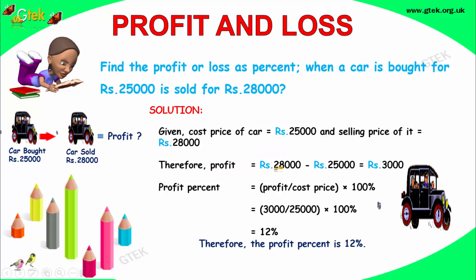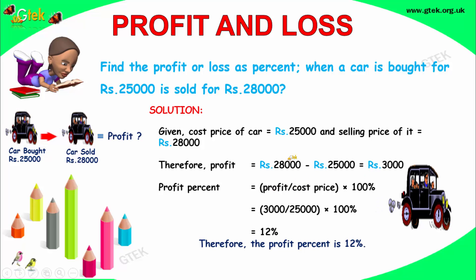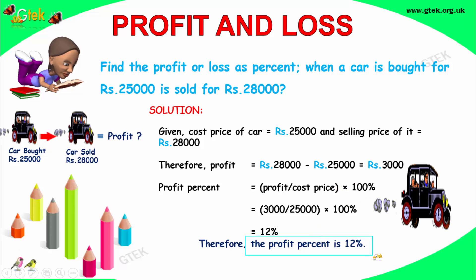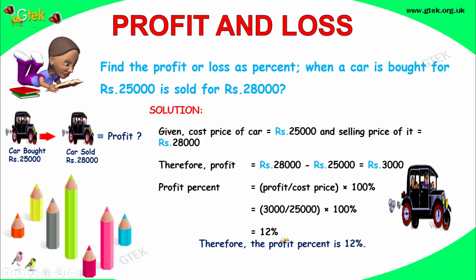So the profit is 3,000. The profit percentage is profit divided by cost price into 100, that is 3,000 divided by 25,000 into 100. Solving this gives 12 percent. So the profit percentage is 12 percent.